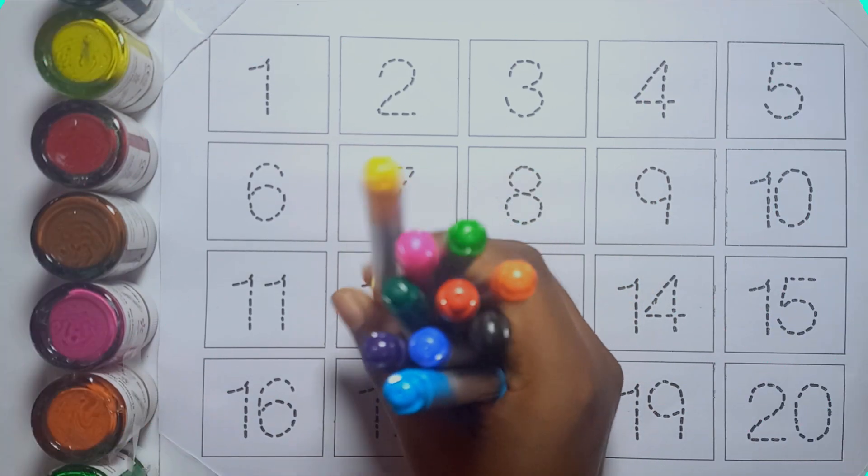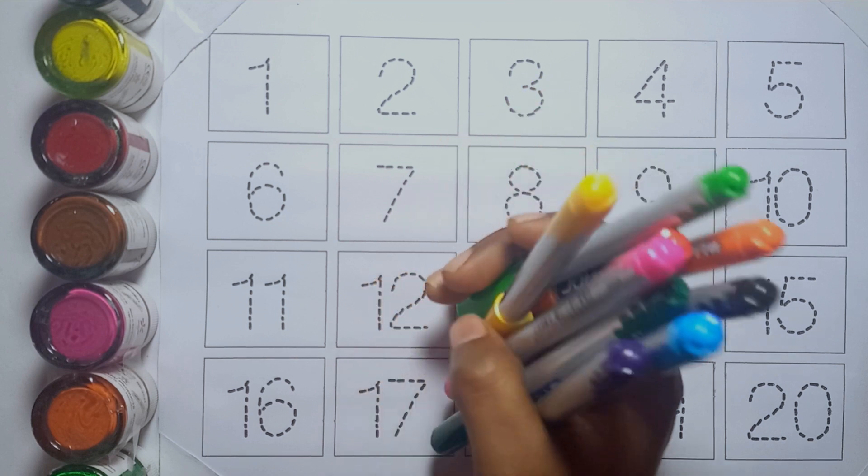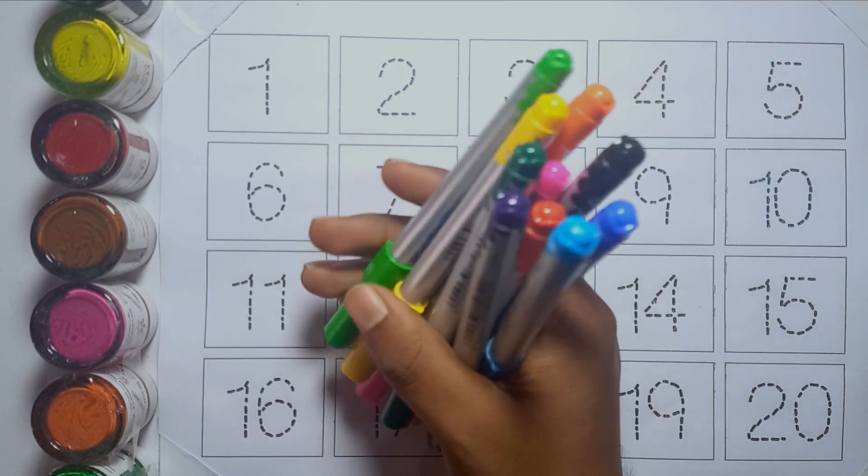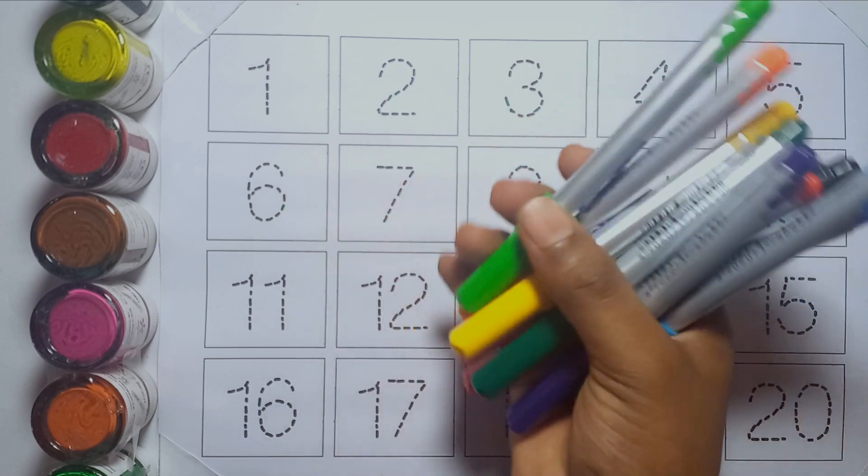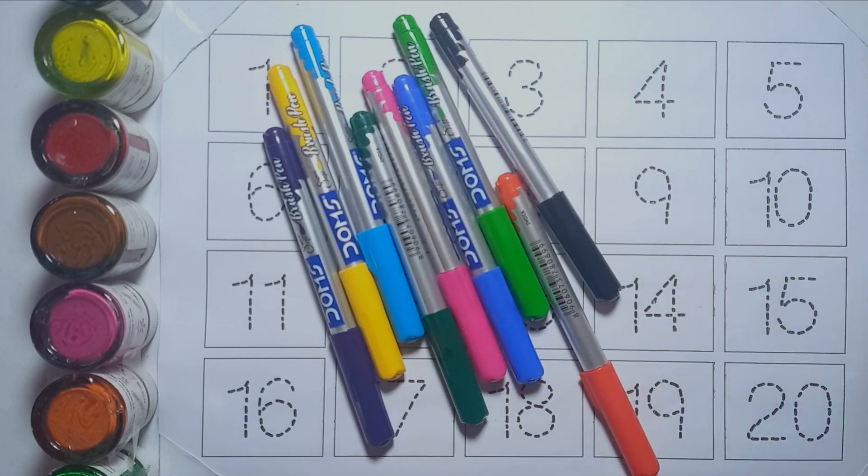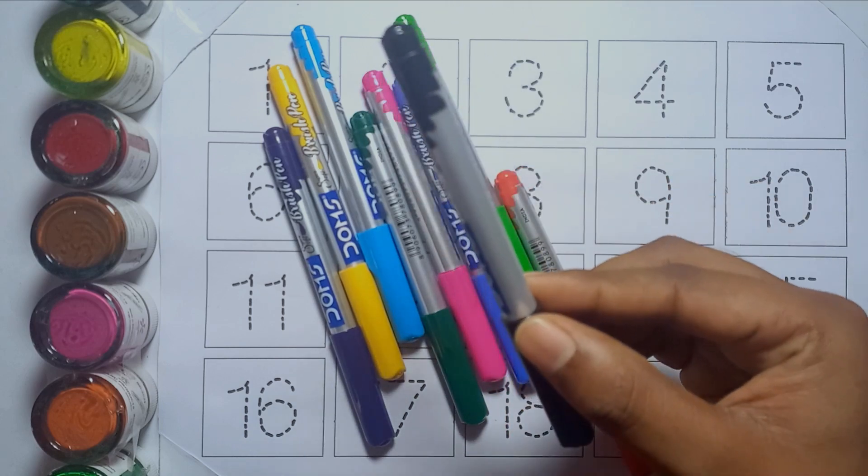Hello kids, today we will learn counting numbers 1 to 20. This is our color: orange color, black color.